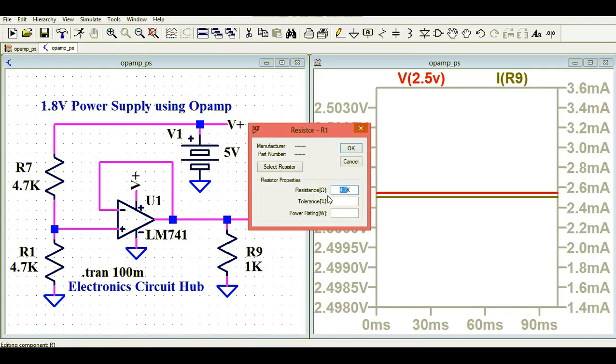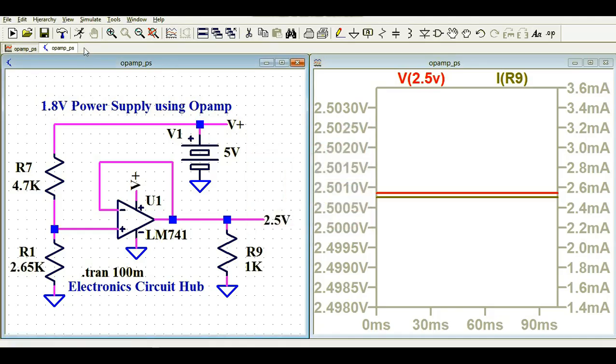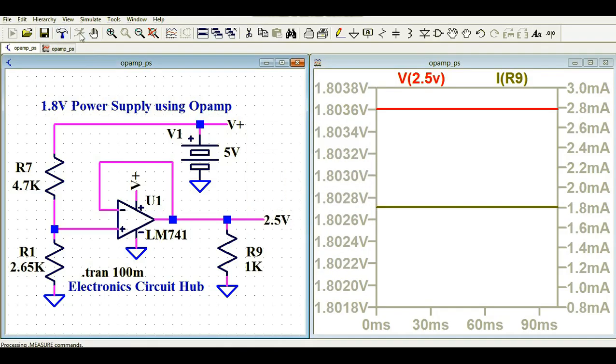Let's say change it to 2.65K. Let me change and see. So if I change the value of the resistor, you have to run the simulation again. And now this time if you look at your output voltage, it's not 2.5 volt, it is 1.8 volt.